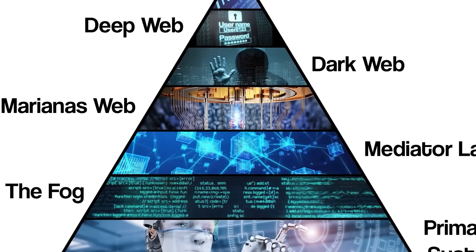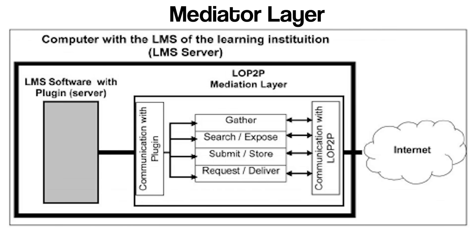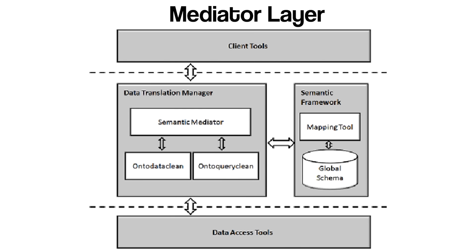The mediator layer, often referenced in speculative Internet models rather than official networking standards, is described as a transitional zone between the more accessible layers of the Internet, such as the Surface Web, Deep Web, and Dark Web, and the deeper, more obscure layers like the Mariana's Web. Though not officially recognized, the mediator layer is theorized to act as a gateway or buffer, providing a controlled or semi-obscured access point to the deeper and more secretive parts of the digital realm. It is said to serve as both a filter and a facilitator, mediating between users and the sensitive information or networks that lie beyond ordinary reach.